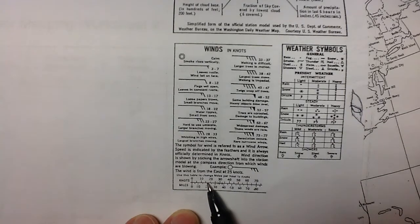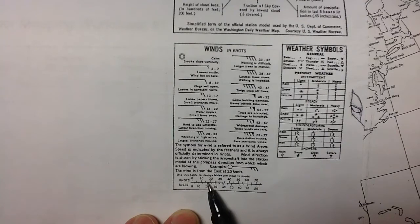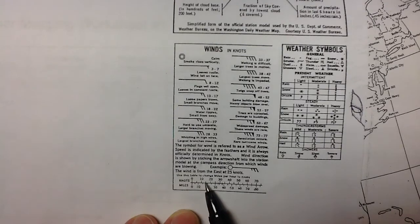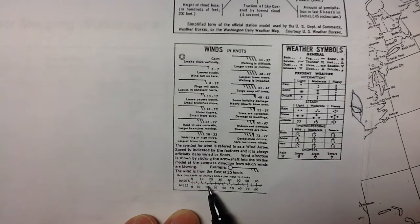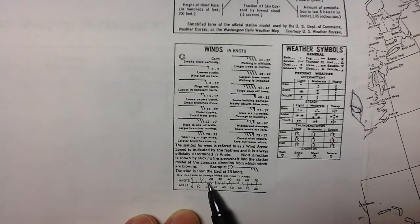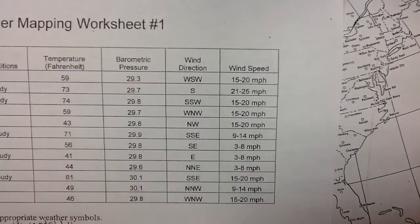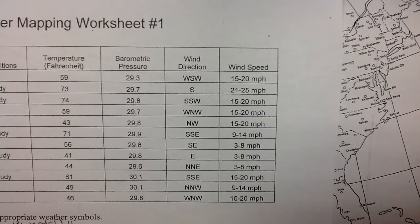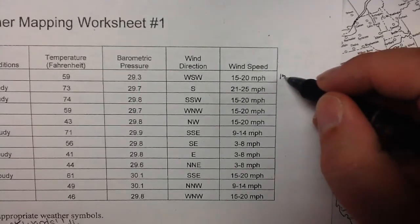The first one we're going to do is the 15 to 20 mile an hour winds. If you look at the upper end of that, which is 20 miles an hour, you'll see that's about 16 to 17 knots. Knowing that we only make our flags every 5 knots — we go by 0, 5, 10, 15, 20, 25, 30 — if we're having 20 mile an hour winds, that's about 16 knots, which we round to 15 knots. So we're going to write 15 knots under every one of the 15 to 20 mile an hour winds.